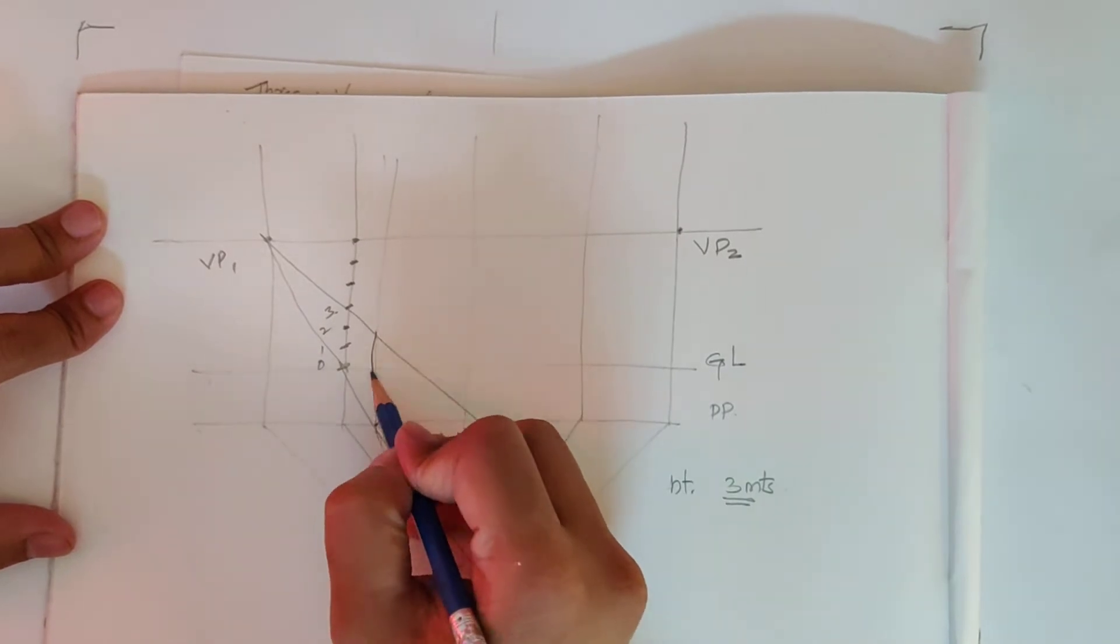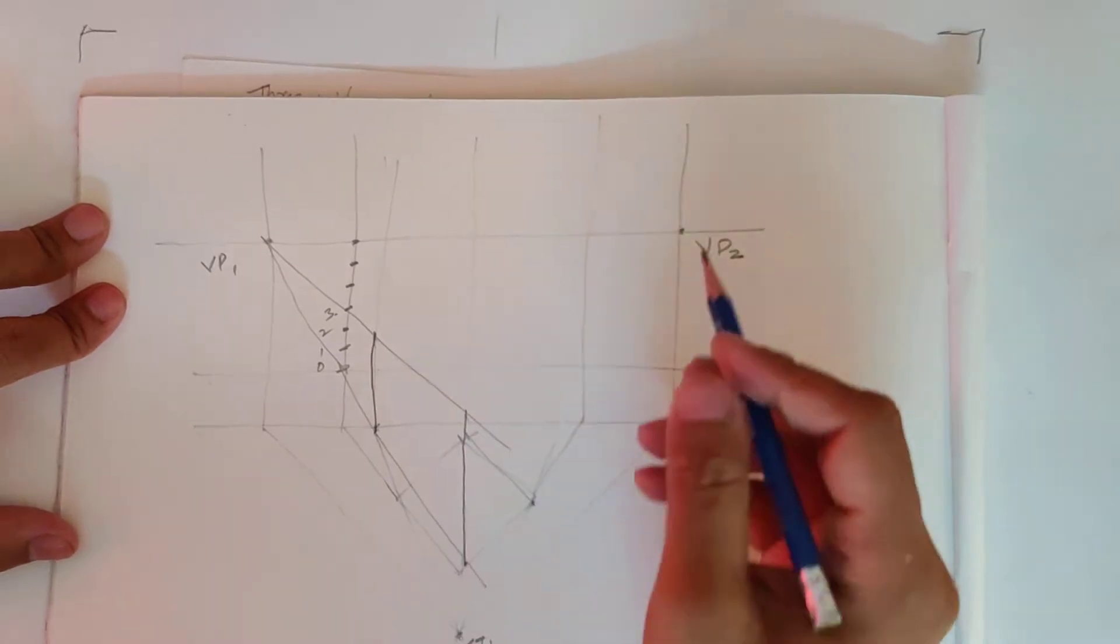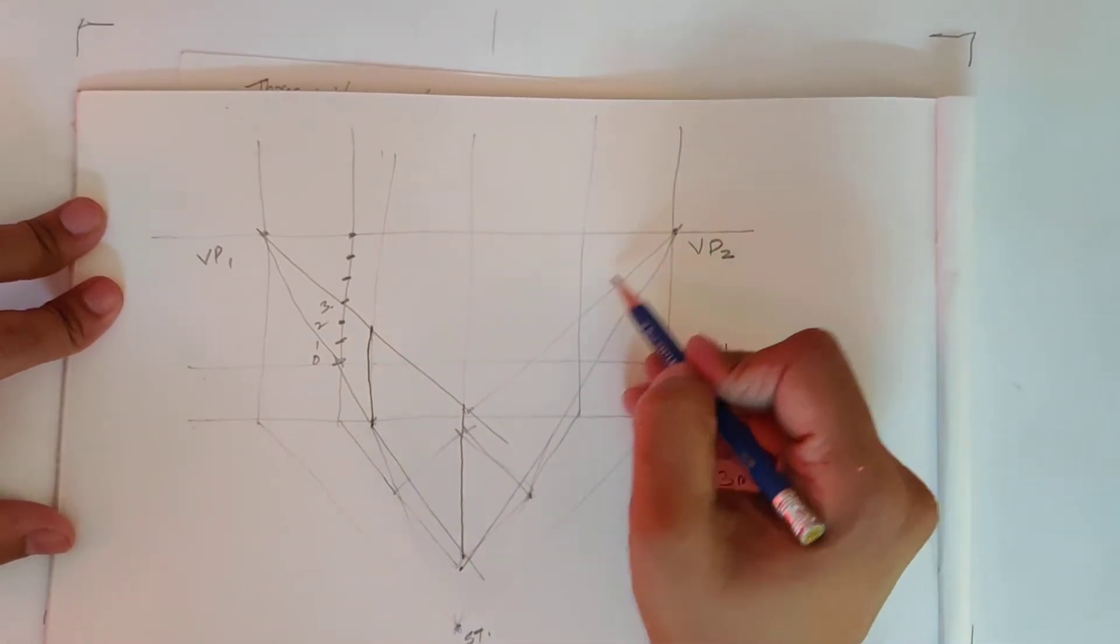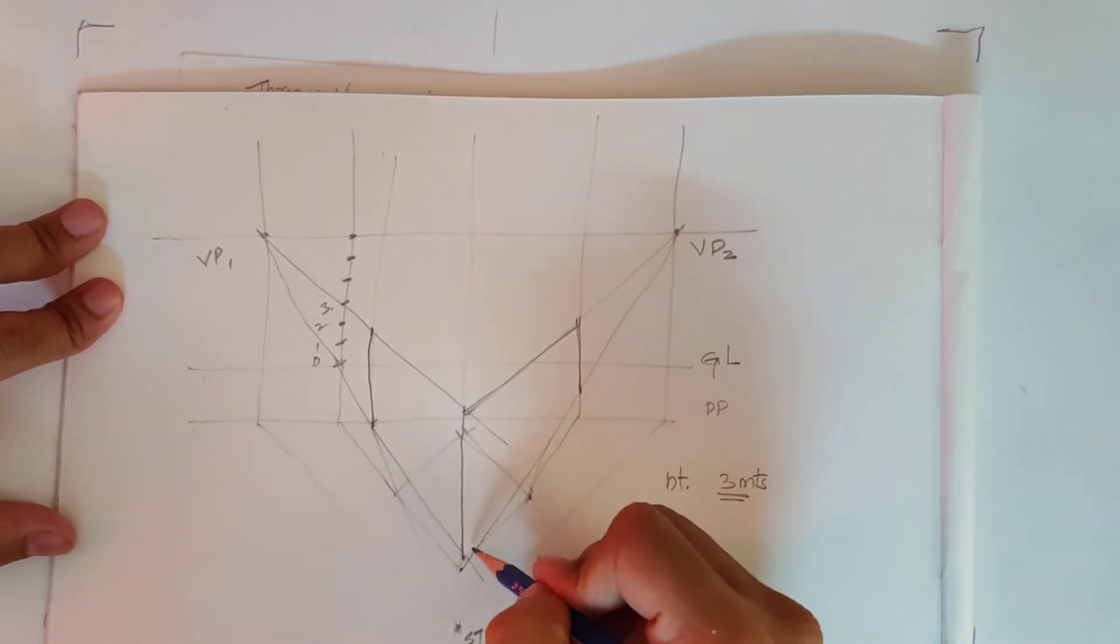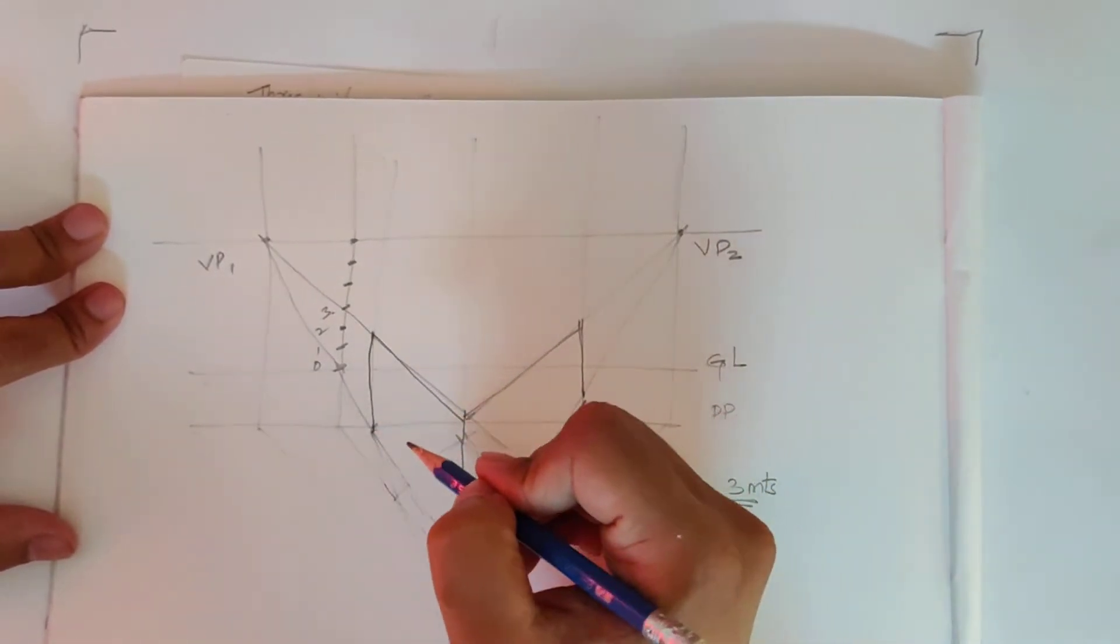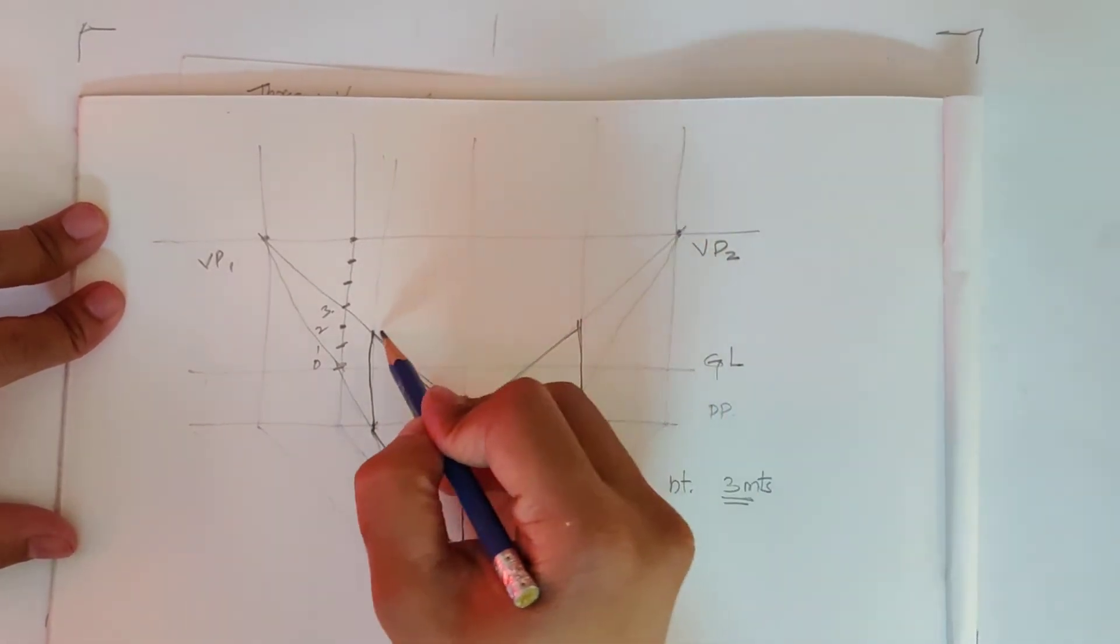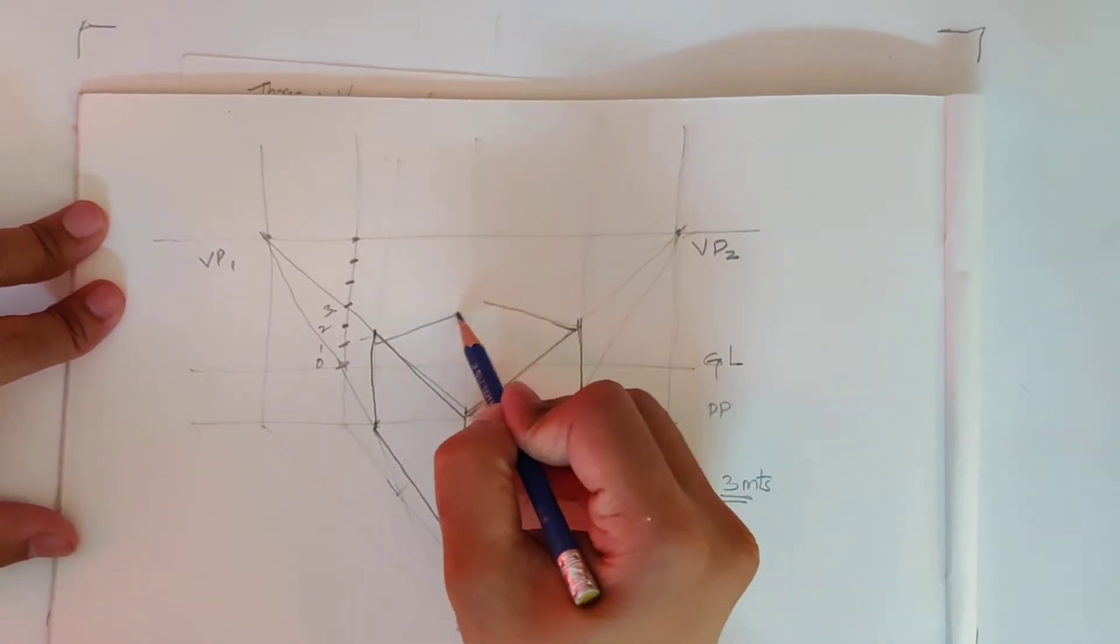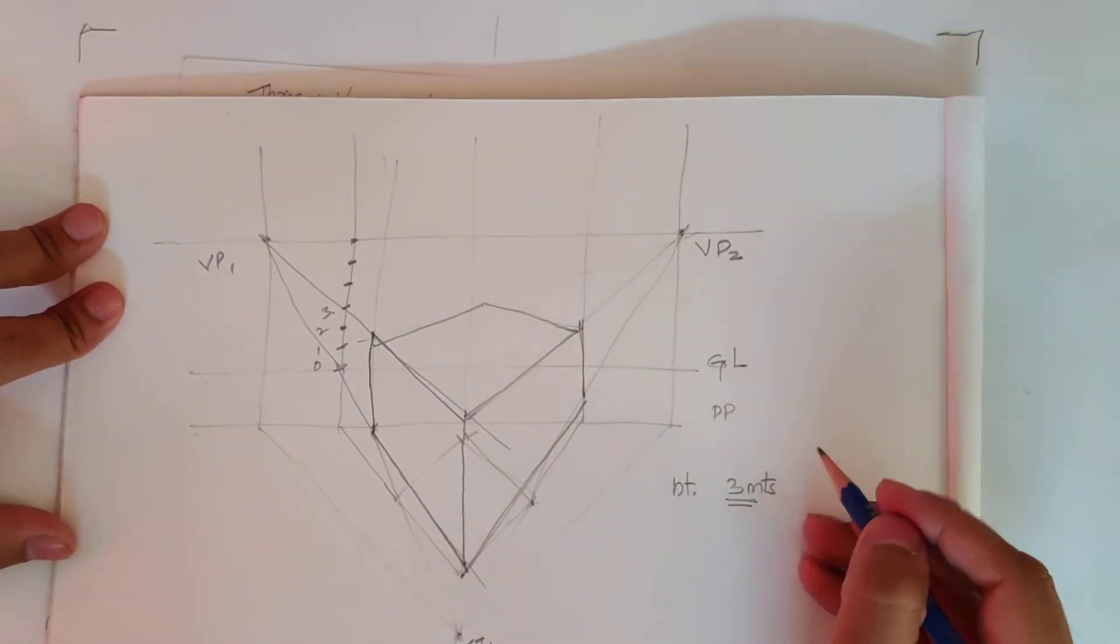So this is my first side. We have this height line. I hope you all remember how to make this thing. We have already covered this in our previous lectures. So I'm not going to go in deep on how to make this. So this is a two-point perspective of an object which has three meters height.